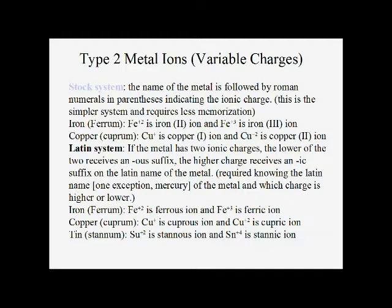For the Latin system, we have to know the Latin name and the two common charges. For iron, the Latin name is ferrum, and the two common charges are plus two and plus three — so plus three is ferric and plus two is ferrous. For copper, the Latin name is cuprum, which is why the symbol is Cu. The two common charges are plus one and plus two, so plus two is cupric and plus one is cuprous. For tin, the Latin name is stannum, and the two common charges are plus two and plus four — tin four is stannic and tin two is stannous.